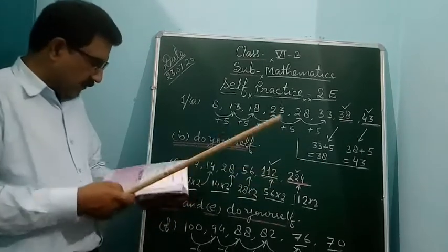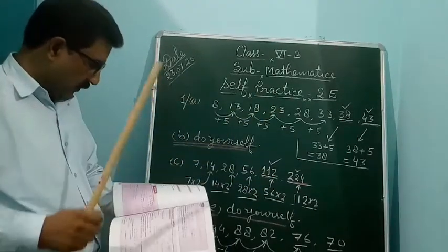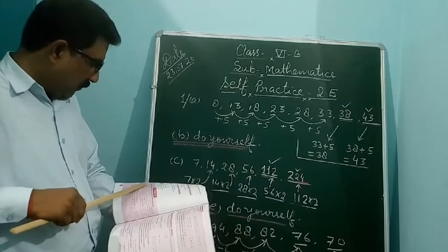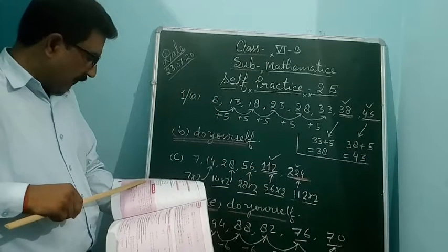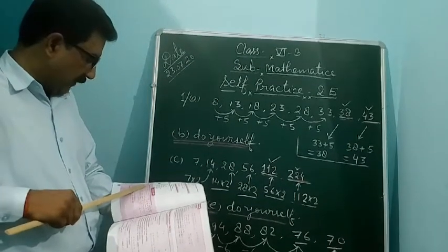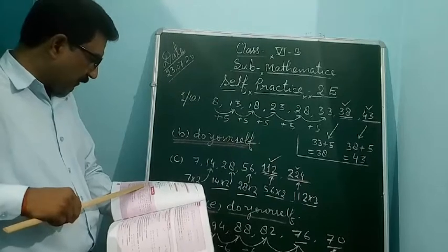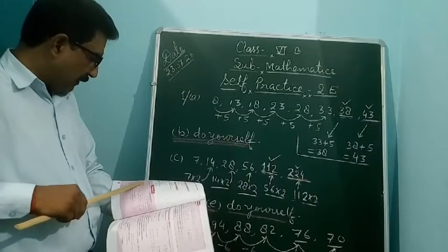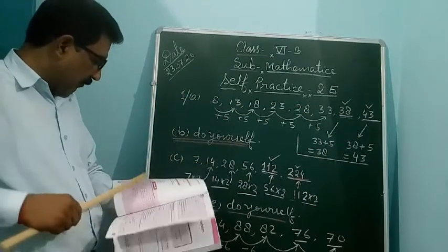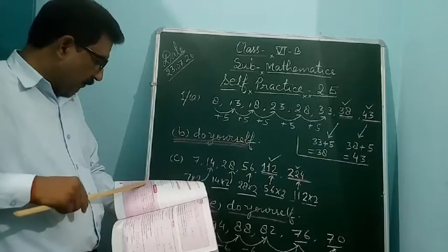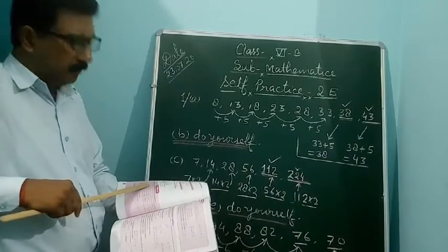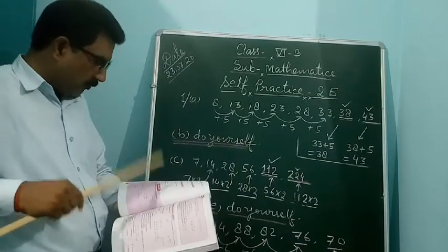Question D: It is given 25, 24, 23, and 22. It is very simple — it is decreased by 1. After 22, it will come 21, and 21 minus 1 will come 20. So you can do it yourself.